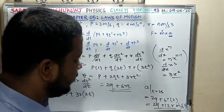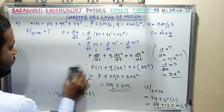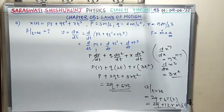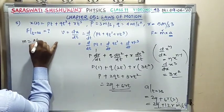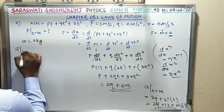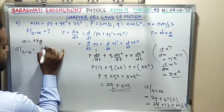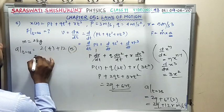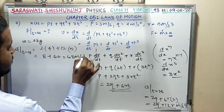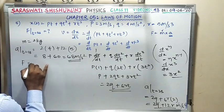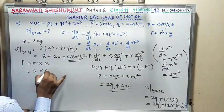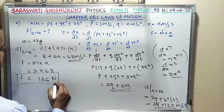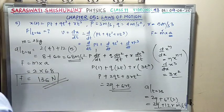Mass is given as 2 kg. Therefore, force F = mA = 2 × 68 = 136 Newton. That is the answer to MCQ 5.